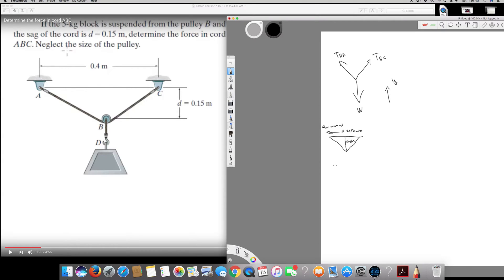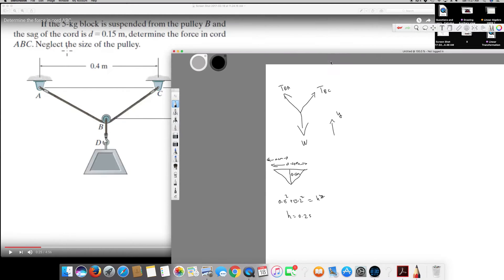Let's use that, so hypotenuse is going to be the square root. 0.15 squared plus 0.2 squared is going to be h squared. So if you solve this, it will become 0.25.